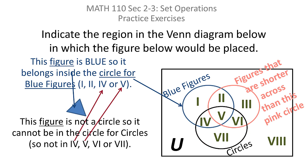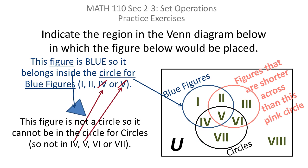That means of the four regions that are in the blue circle — one, two, four, and five — it's not four or five because they're inside the circle's circle. So you have to eliminate four and five. That leaves just one and two.